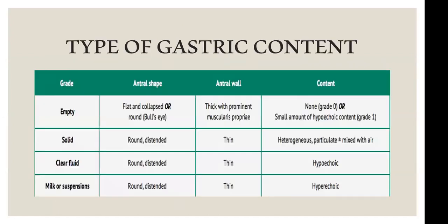The gastric antrum may appear empty, contain clear fluid, solid, a mix of solid and liquid (typical post-meal), or milk/suspension. In an empty antrum, it is thinned out and collapsed, showing a flat bullseye appearance — a hypoechoic center surrounded by the hyperechoic muscularis propria. This is Grade 0. With solid content, the antrum appears round and distended with thinner walls and heterogeneous echogenicity — a whitish frosted-glass appearance with black spots from air.